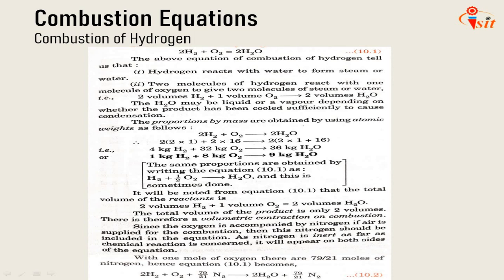We will see the combustion of hydrogen first. The equation is: 2H2 + O2 → 2H2O. Two molecules of hydrogen react with oxygen to get water. So two volumes of H2 plus one volume of O2 gives two volumes of H2O. The H2O may be liquid or vapor depending upon whether the product has been cooled for condensation. By proportion of mass: 2H2 + O2 → 2H2O. The molecular weight of hydrogen is 2 and O2 is 32 (2 × 16). So we get 4 kg H2 + 32 kg O2 = 36 kg H2O.